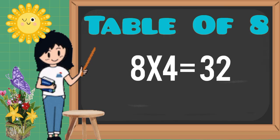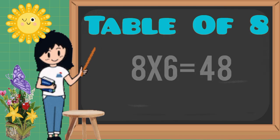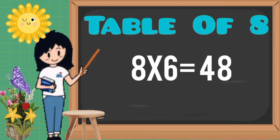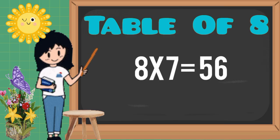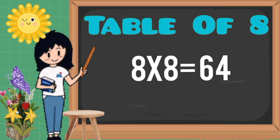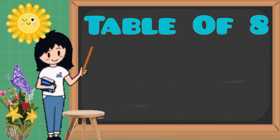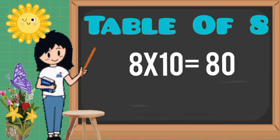Eight fives are forty, eight sixes are forty-eight, eight sevens are fifty-six, eight eights are sixty-four, eight nines are seventy-two, eight tens are eighty.